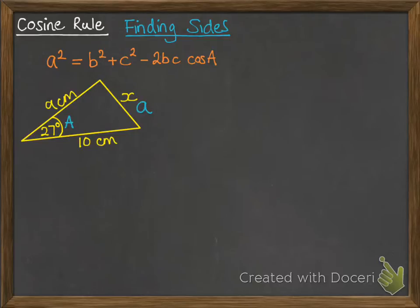For example we've got the a and the a there. We want to work out x so we label that with lowercase a and its opposite angle is capital A. But we run into problems when we try and do a matching pair.